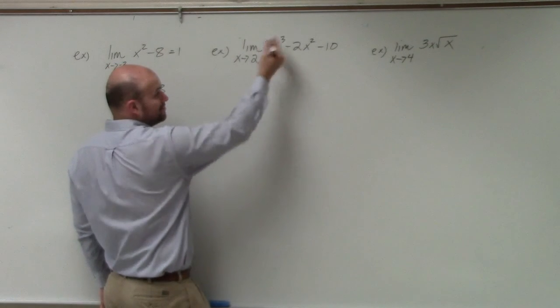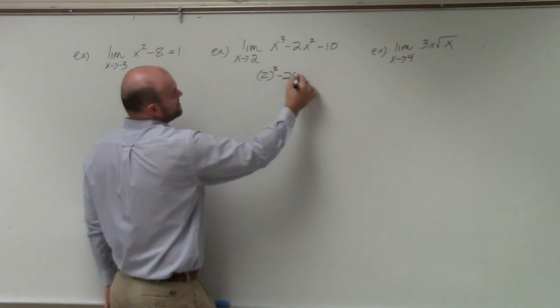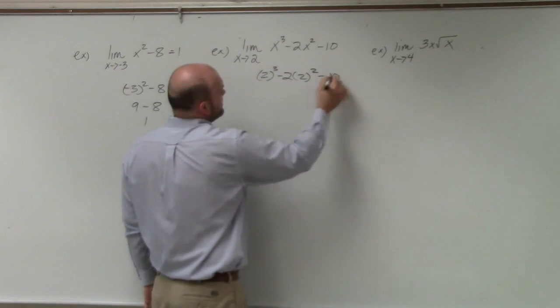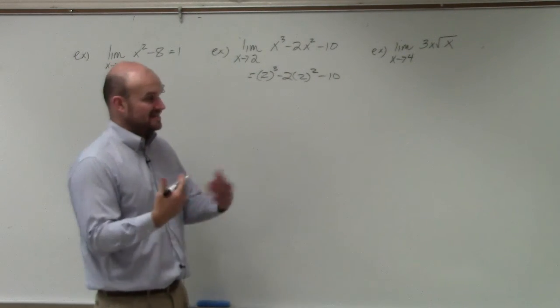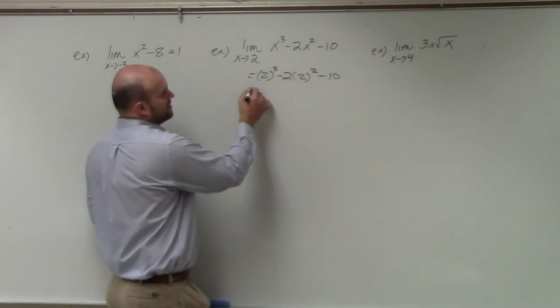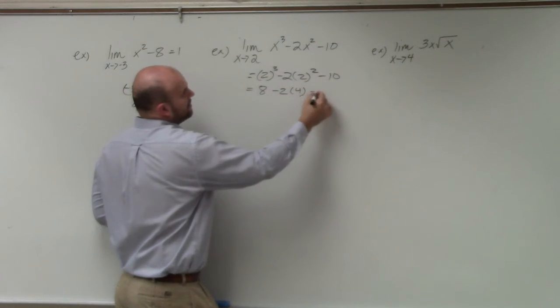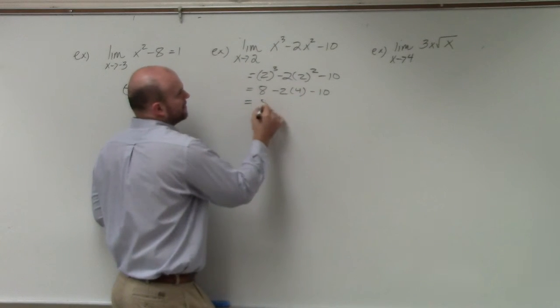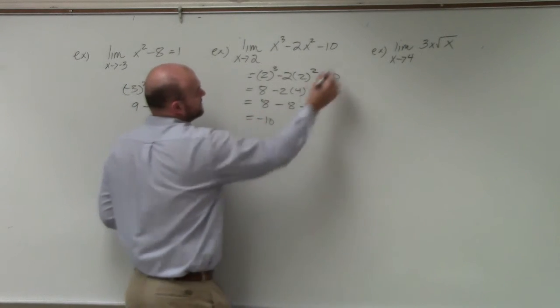Over here, I'm just going to take 2, plug it into the function. So I have 2 cubed minus 2 times 2 squared minus 10. Please note how I am using my use of parentheses as I am plugging in those values. So therefore, I have 8. This becomes negative 2 times 4 minus 10. So therefore, that's 0. So I'm equal to negative 10.